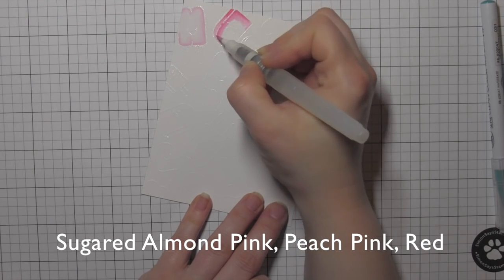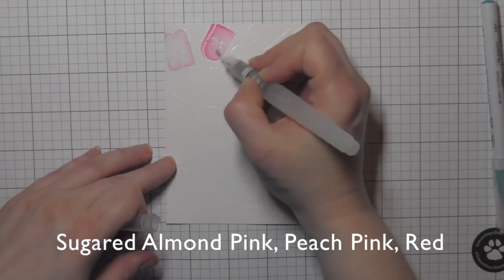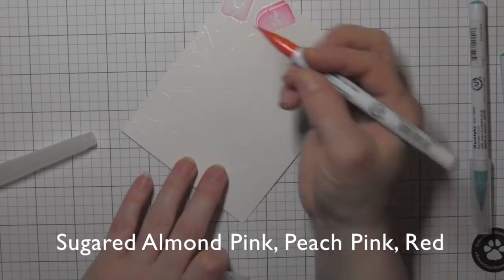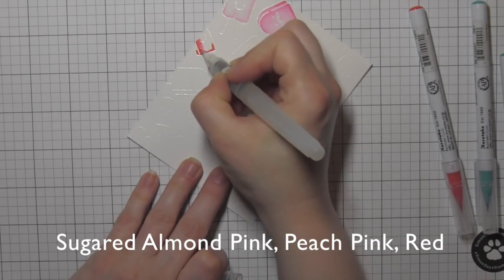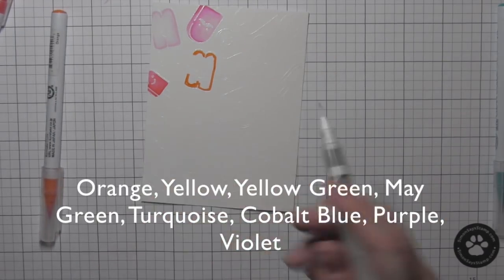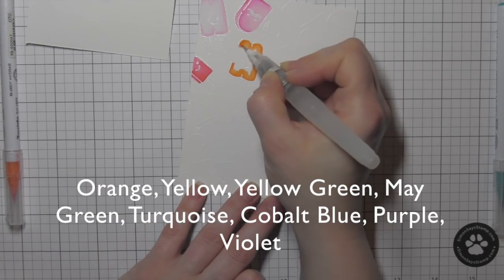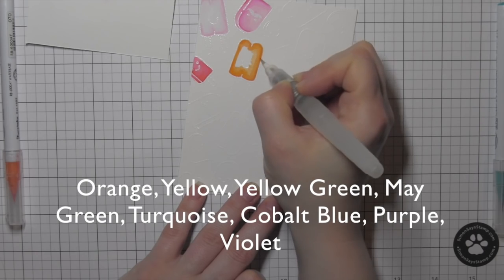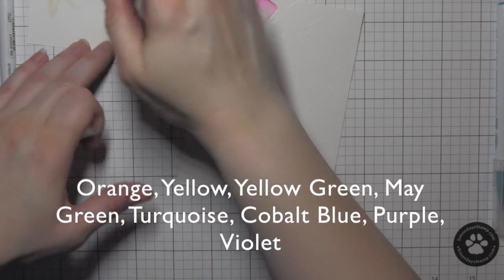And then I'm going to take a water brush. This is the Tim Holtz fine detail water brush, and I've got water in the brush itself. I'm going to blend out that color throughout the rest of the popsicle shape, and that's really going to give that variation in color so that you can definitely, you don't have to use two colors or anything like that. Really simple, one color per popsicle, and then just spread that color out with the water brush. Really quick and easy.